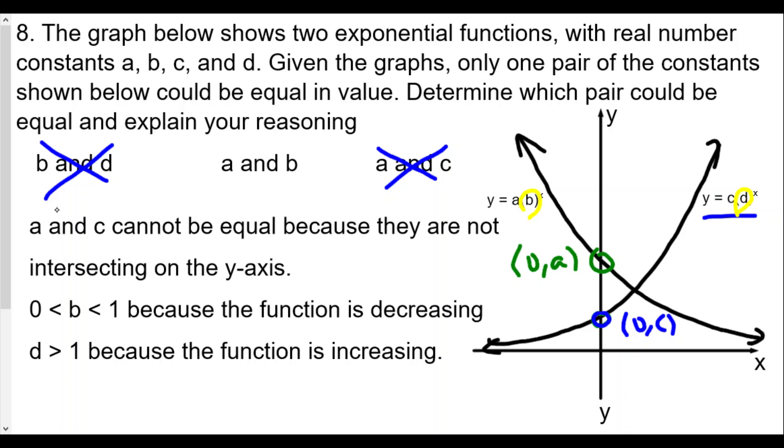Therefore, because of this, b and d cannot be equal. You can't have a number between 0 and 1 and greater than 1 at the same time. The only possible pair that could be equal are a and b. We don't know what the value of a is, but a probably has to be less than 1, so it's possible. This is the only one that could possibly be true.